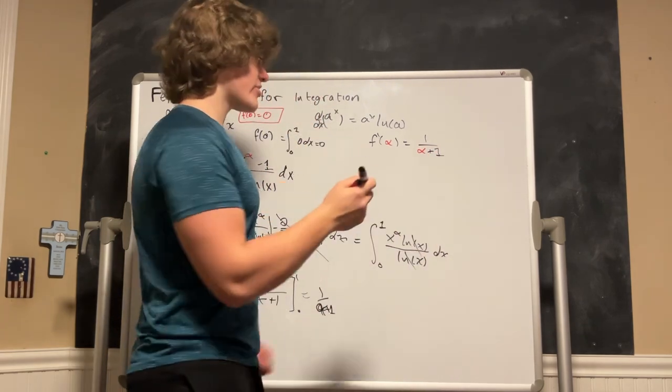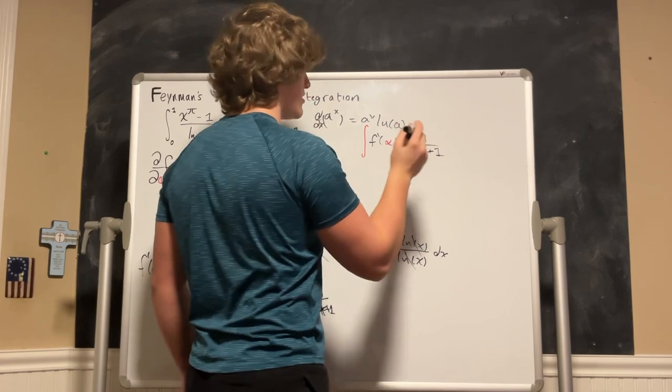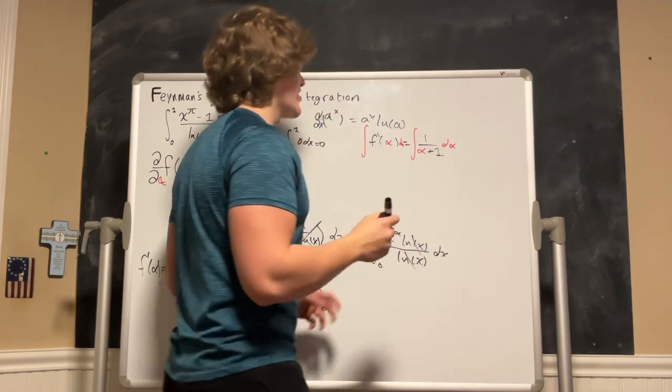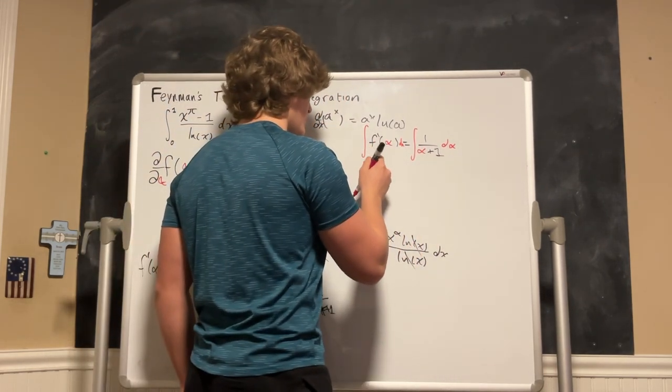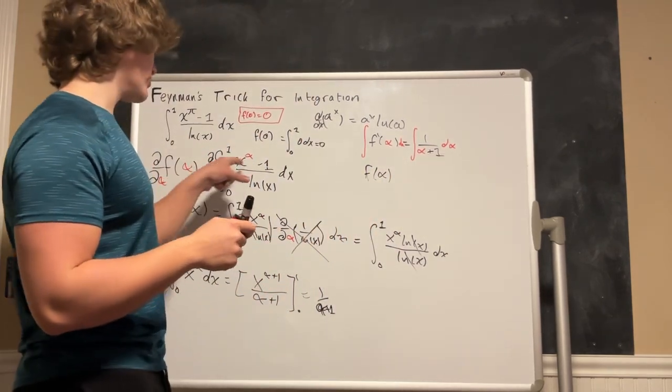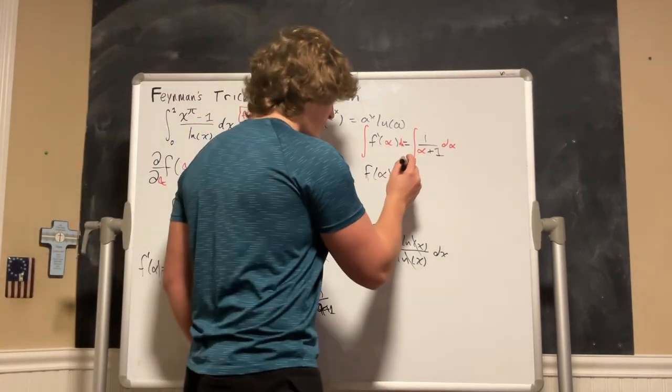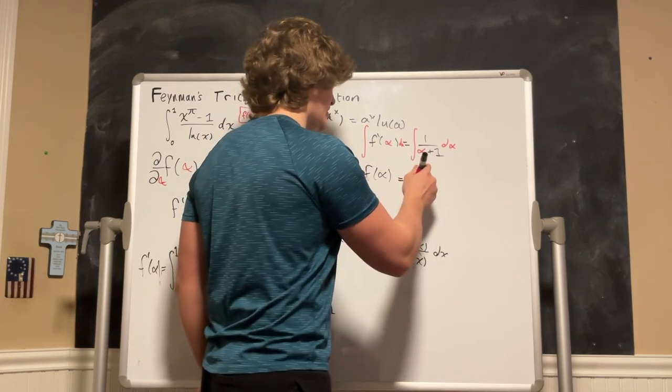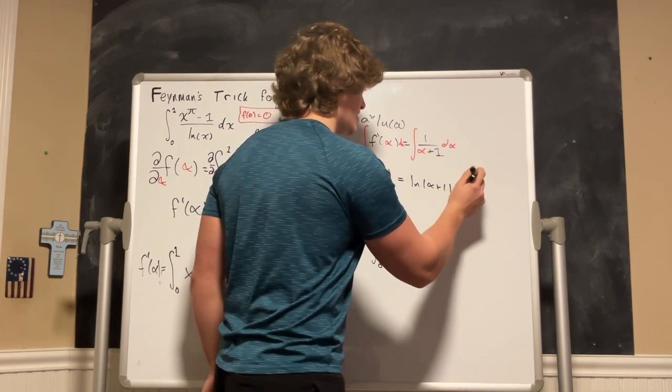And now we are going to integrate this function with respect to alpha on both sides of course, which will then give us on this side just f of alpha which if you remember that was just our initial integral with this variable. And that is equal to the ln of the absolute value of alpha plus 1 plus a constant c.